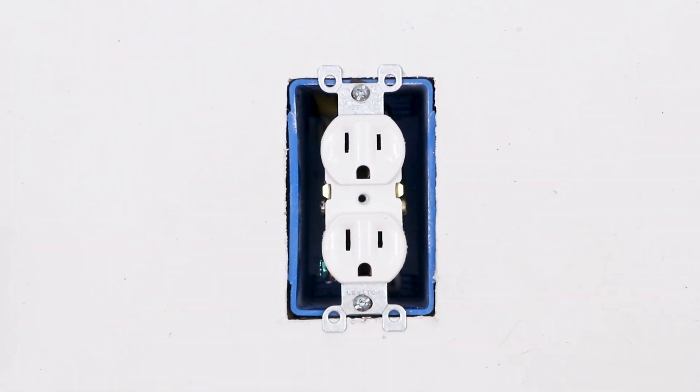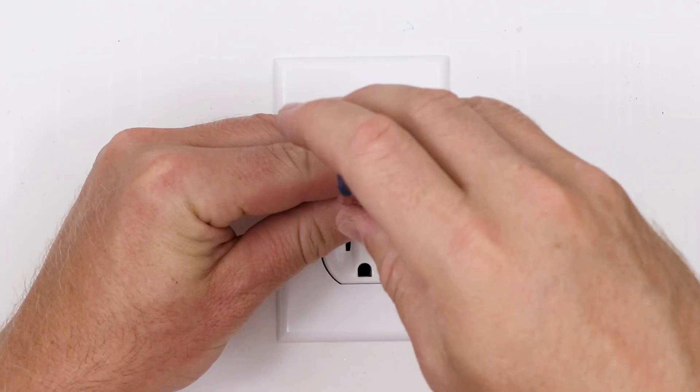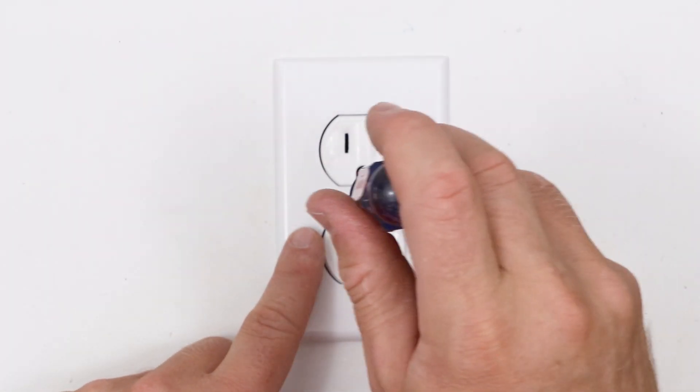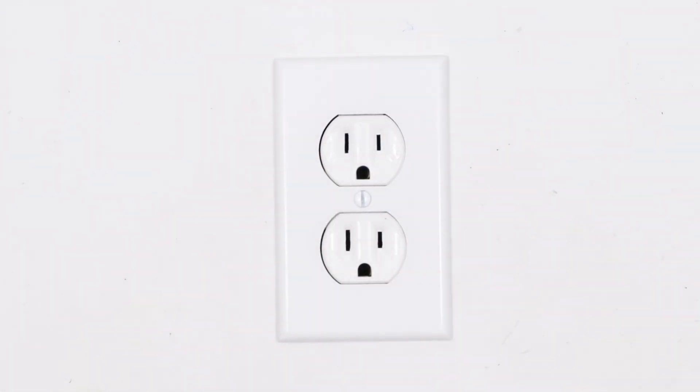The receptacle's secure, now ready to put our new faceplate on. Just a little finishing touch I like to do. I like to make sure that this screw for the faceplate is straight up and down, just like the slots on the receptacle.